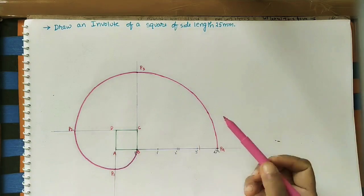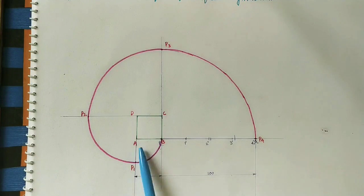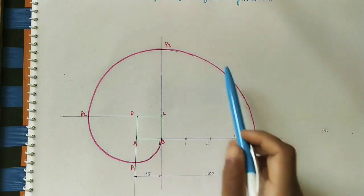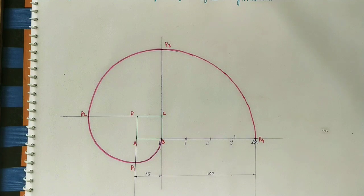This is the involute. Mark the given dimensions: side length of the square is 25 mm, PQ is the peripheral length of the square (100 mm), and this curve is called an involute for the given square. Involute for circle and hexagon videos are already available, I will give the video link in the description box.